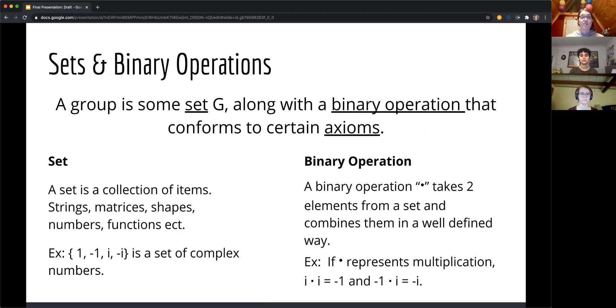Sets and binary operations. A set is any collection of items be it strings, matrices, shapes, etc. An example of which would be the complex numbers in the set below: 1, negative 1, i, and negative i. A binary operation is something that takes two elements from a set and combines them together in a well-defined way, be that addition, subtraction, etc.